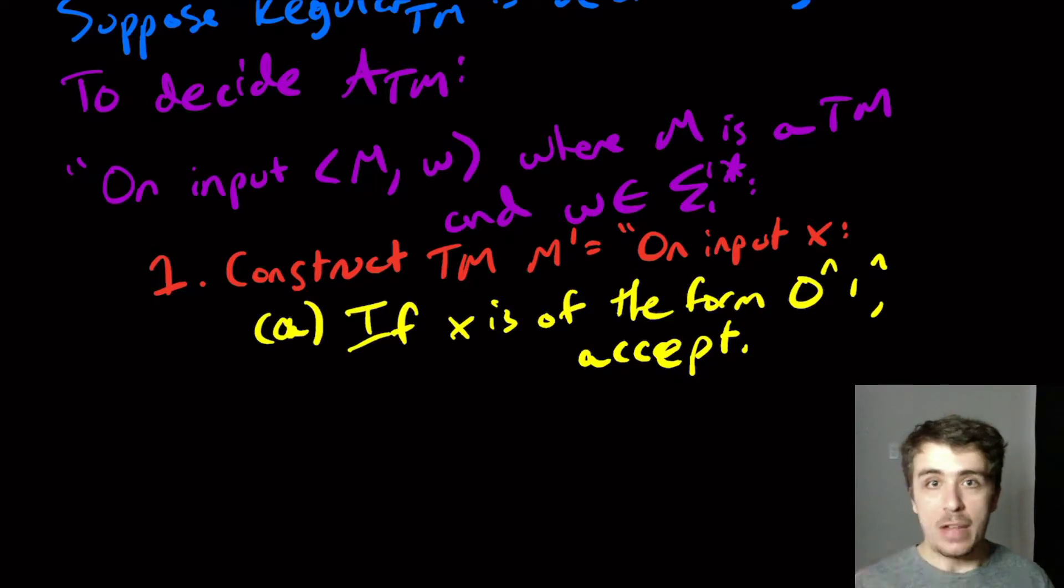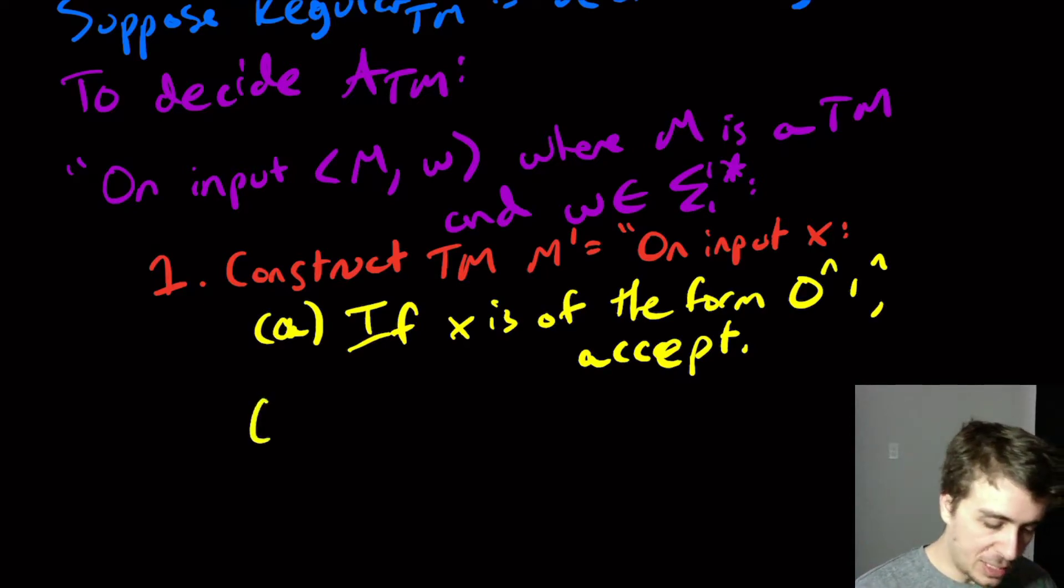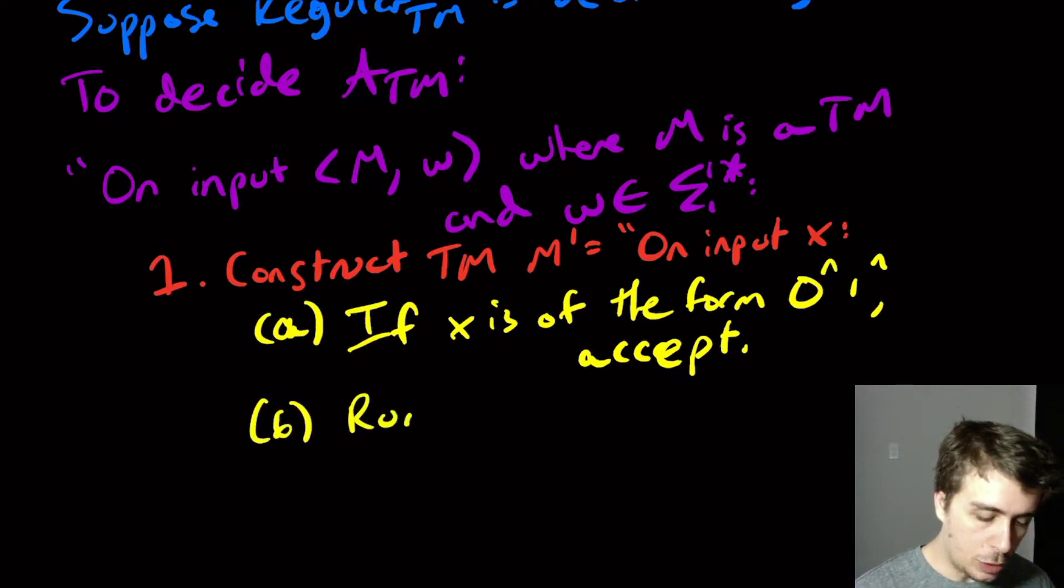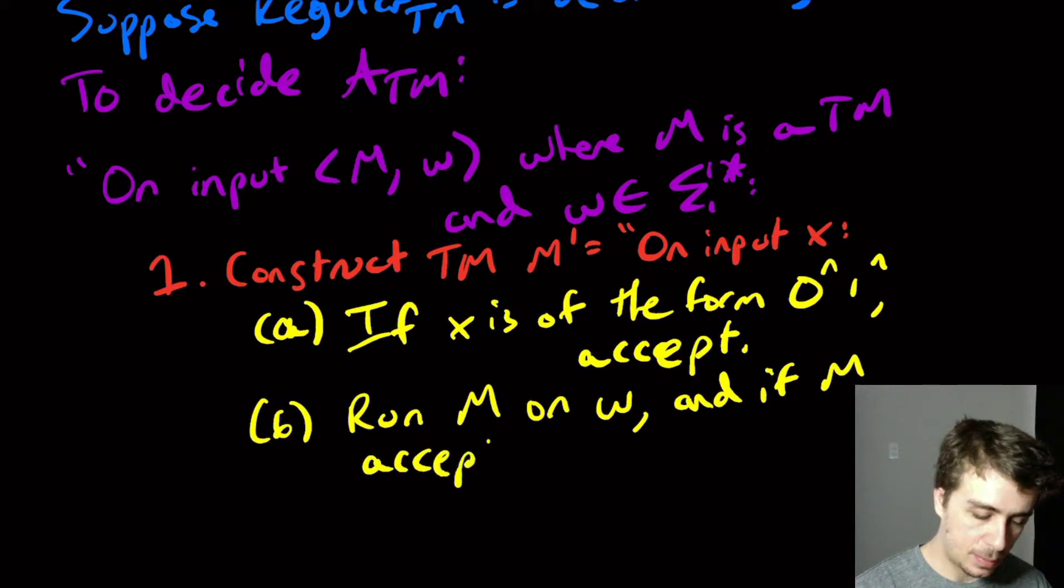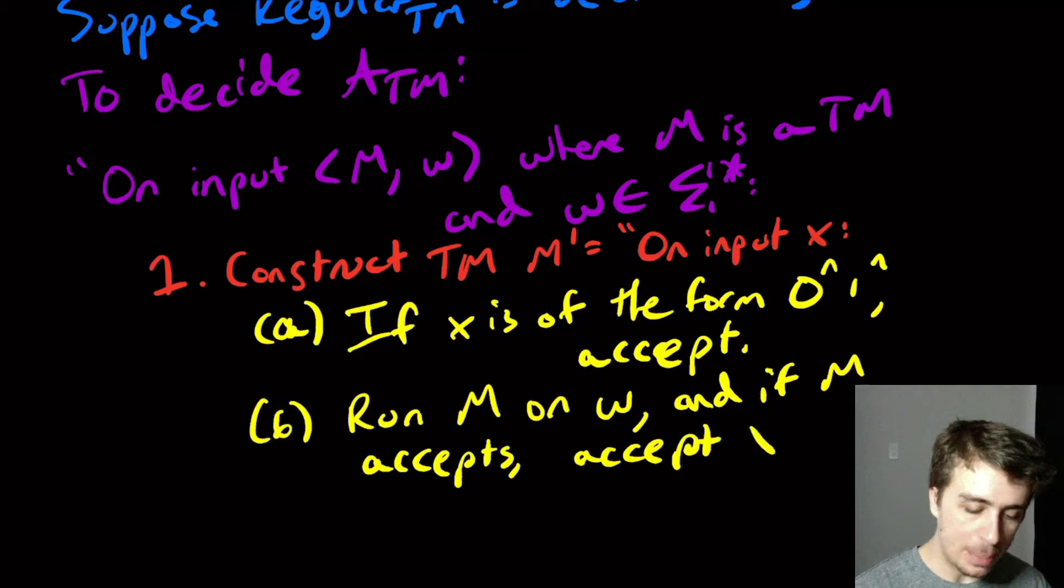So if nothing else happens, then the language of M prime is going to be the 0^n 1^n language. But as step B, what we're going to do is run M on W, which is the original Turing machine and the original input, not X. And if M accepts, then we're going to accept X.